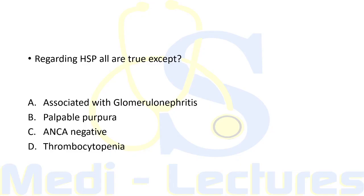Practice question: 'Regarding HSP — all are true except?' Associated glomerulonephritis leading to hematuria — true. Palpable purpura is a typical manifestation — true. It is an example of ANCA-negative vasculitis — true. Thrombocytopenia is not seen — this is the correct answer (false statement), as thrombocytopenia is not a feature of HSP.